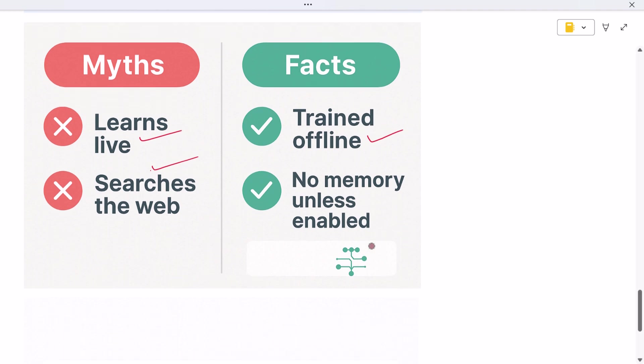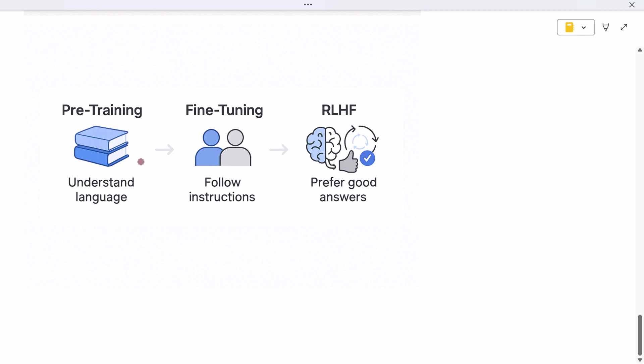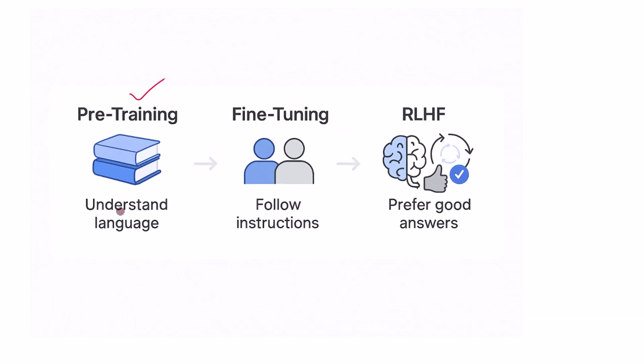Let's recap the full training process. First, it was pre-trained on huge amounts of public text. This gave it a deep understanding of language. Then it was fine-tuned by humans. This helped it follow instructions and stay safe. Finally, it learned from human feedback on what makes a good answer, and used that to improve how it responds.